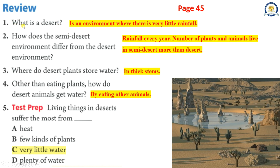Review. 1. What is a desert? It is an environment where there is very little rainfall. 2. How does the semi-desert environment differ from the desert environment? Rainfall occurs every year, and the number of plants and animals living in the semi-desert is more than in the desert. 3. Where do desert plants store water? In thick stems. 4. Other than eating plants, how do desert animals get water? By eating other animals. 5. Living things in desert suffer the most from: A. Heat, B. Few kinds of plants, C. Very little water, D. Plenty of water. Correct answer: C. Very little water.